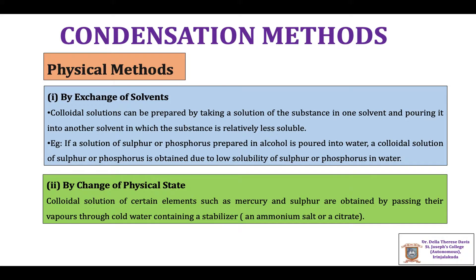We will first discuss the physical methods. The first method is exchange of solvents. Colloidal solutions can be prepared by taking a solution of a substance in one solvent and pouring it into another solvent in which the substance is relatively less soluble. For example, if a solution of sulfur or phosphorus prepared in alcohol is poured into water, a colloidal solution of sulfur or phosphorus can be obtained due to the low solubility of the same in water.